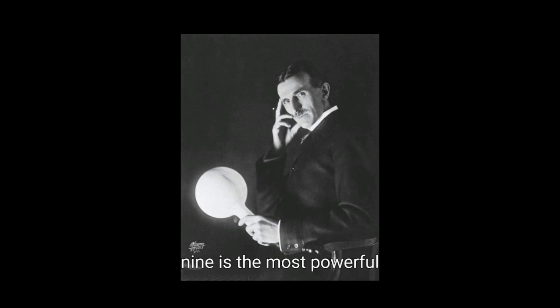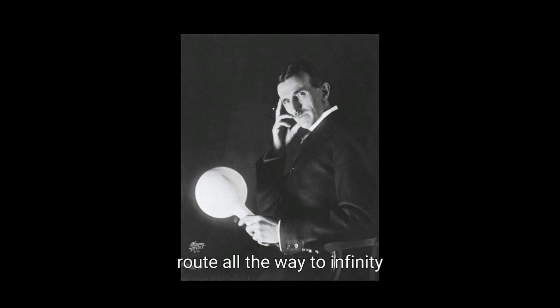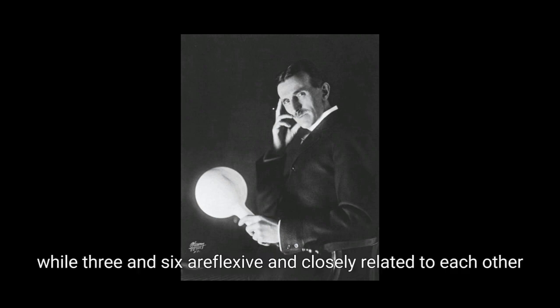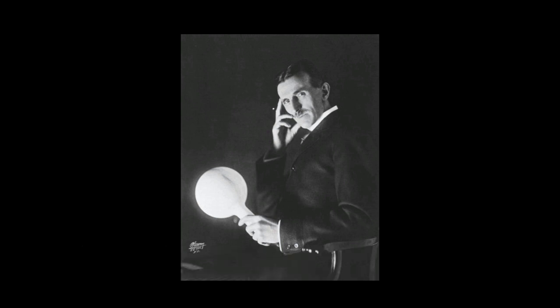Is 9 the most powerful number? 9 is the most powerful number because 9 governs everything. 9 stands at the top of the vortex and reflects itself in every digital route all the way to infinity. It also represents the void, or nothing, as well as infinity, or everything. While 3 and 6 are reflexive and closely related to each other, 9 stands apart as the supreme divine number in the set of numbers that make up a key to the universe. For Nikola Tesla, 3, 6, 9 is a single unit and should be viewed as such.